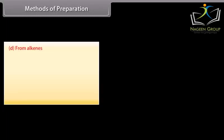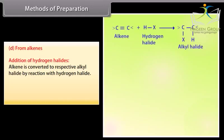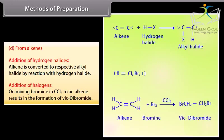Methods of Preparation from alkenes. Addition of hydrogen halides: an alkene is converted to an alkyl halide by a reaction with hydrogen halide. Addition of halogens: on mixing bromine in CCl4 with an alkene, it results in the formation of a vic-dibromide.